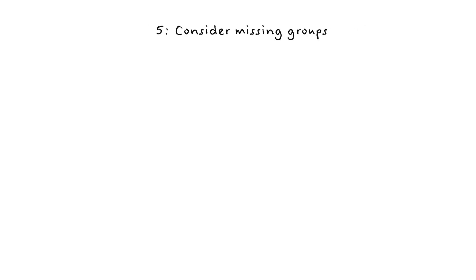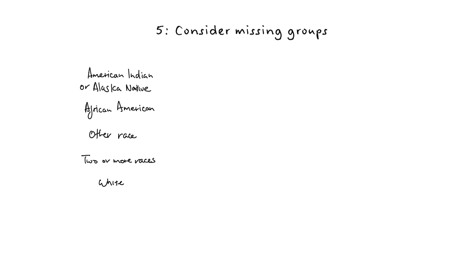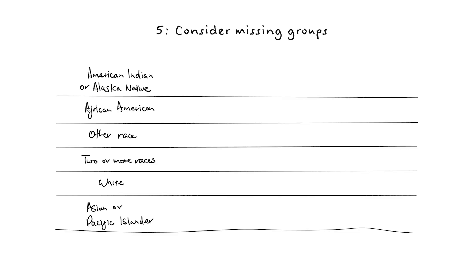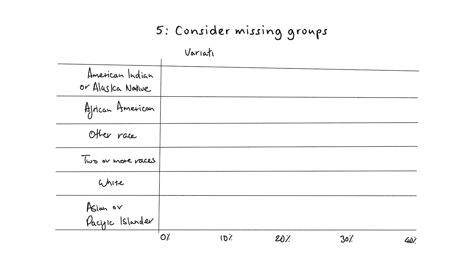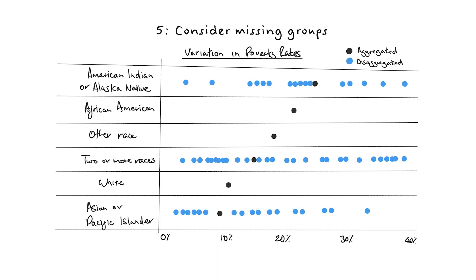5. Consider missing groups. It's important to acknowledge who is and who is not included in our data and charts. For example, in the United States, many charts on race and ethnicity only show white people, black people, and Hispanic or Latino people, but not other racial or ethnic groups. Charts sometimes only show data in these broader racial groupings, rather than at a more disaggregated level where nuances are more readily understood. Consider adding notes that explain why the data are not inclusive or representative.